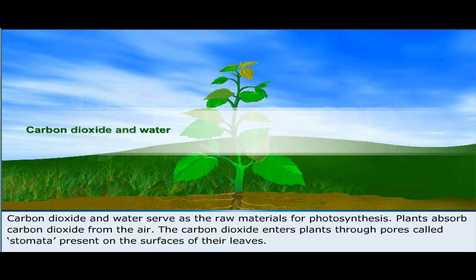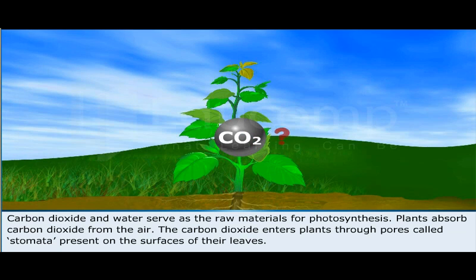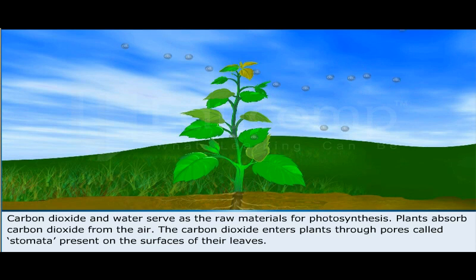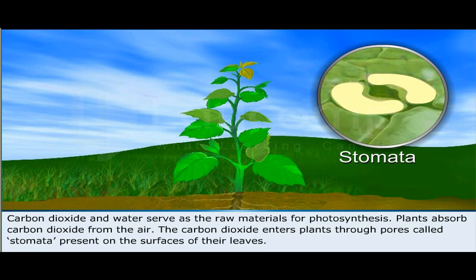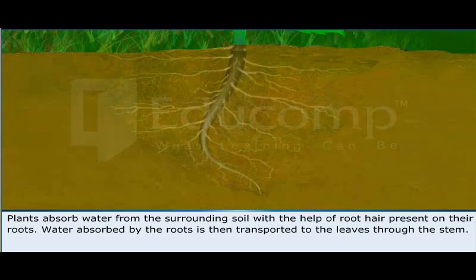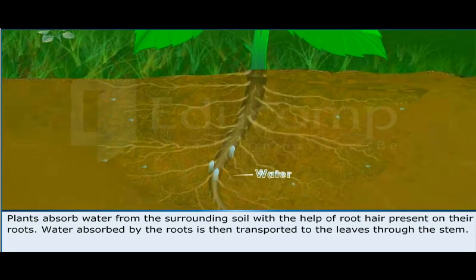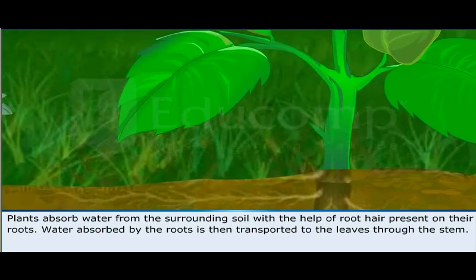Carbon dioxide and water serve as the raw materials for photosynthesis. Plants absorb carbon dioxide from the air. The carbon dioxide enters plants through pores called stomata present on the surfaces of their leaves.